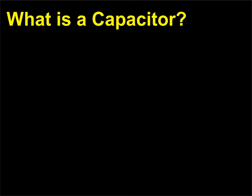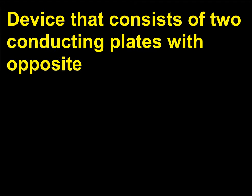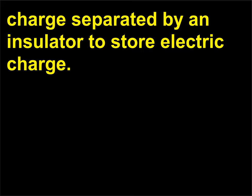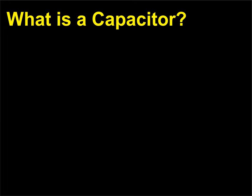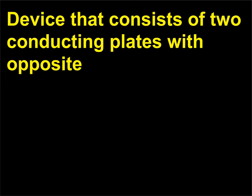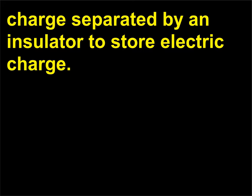What is a capacitor? It is a device that consists of two conducting plates with opposite charge separated by an insulator, used to store electric charge.